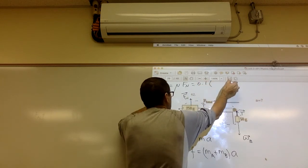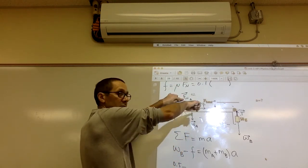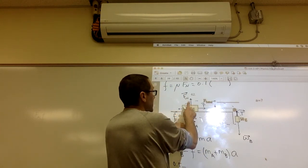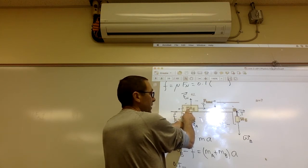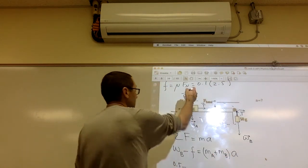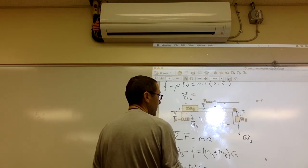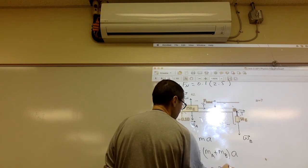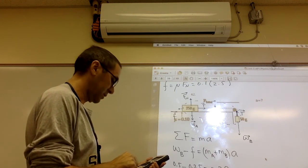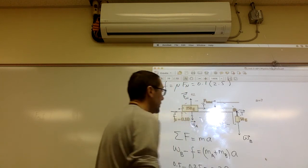The normal force fn equals the weight of A because block A doesn't move vertically. Converting A to kilograms: 250 g = 0.25 kg, so fn = 0.25×10 = 2.5 N and ff = 0.1×2.5 = 0.25 N. Total mass is 300 g = 0.3 kg. So 0.5 − 0.25 = 0.3×a, giving a = 0.25/0.3 = 0.833 m/s².